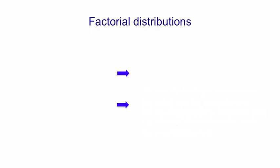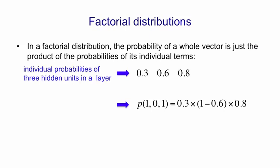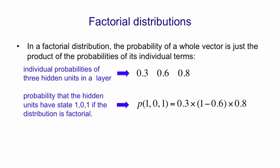So let's quickly look at what a factorial distribution is. In a factorial distribution, the probability of a whole vector is just the product of the probabilities of its individual terms. So suppose we have three hidden units in a layer and they have probabilities of being on of 0.3, 0.6 and 0.8. If we want to compute the probability of the hidden layer having the state 1, 0, 1, we compute that by multiplying 0.3 by 1 minus 0.6 by 0.8. So the probability of a configuration of the hidden layer is just the product of the individual probabilities. That's why it's called factorial.